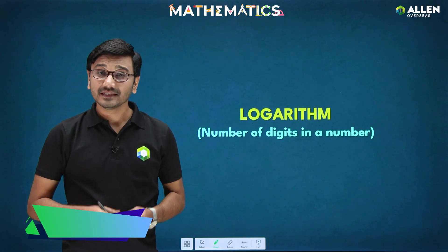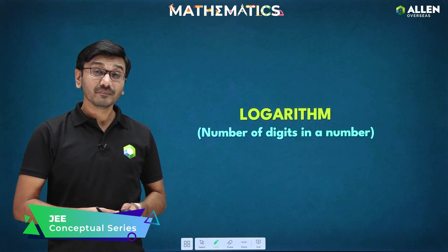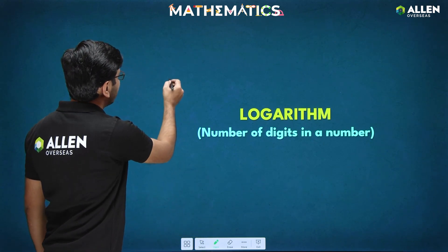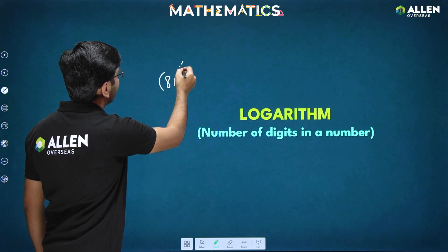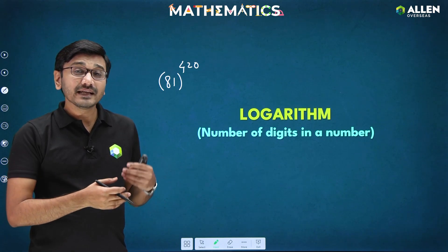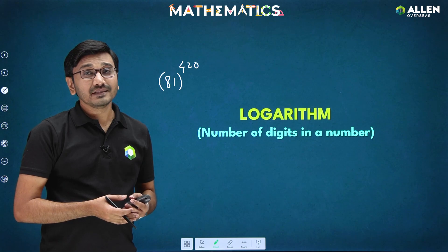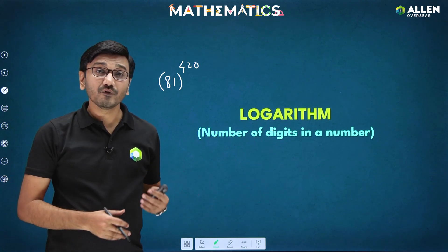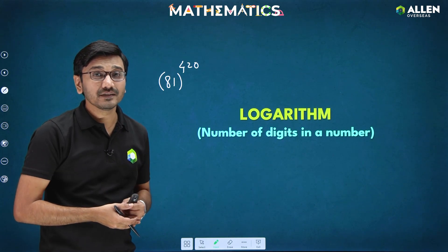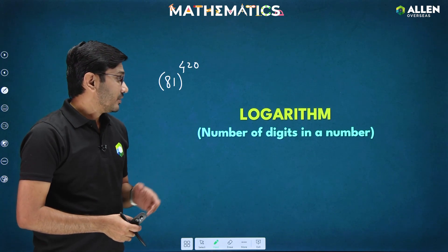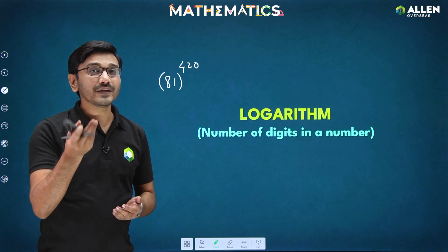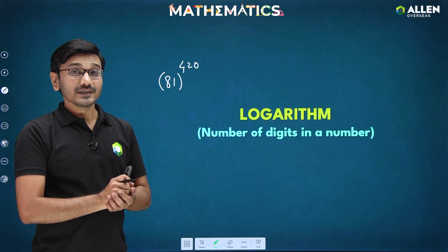Hello students, welcome to Alan Overseas. In this video today we will be learning how we can find out the number of digits in a given number. Suppose if I ask you: I have a number like 81 raised to 420, and you want to find out how many digits are there in this number. Calculating 81 raised to 420 is a very large calculation, giving a very big number, and counting its digits would be very difficult. But using logarithm we can solve such questions very easily.